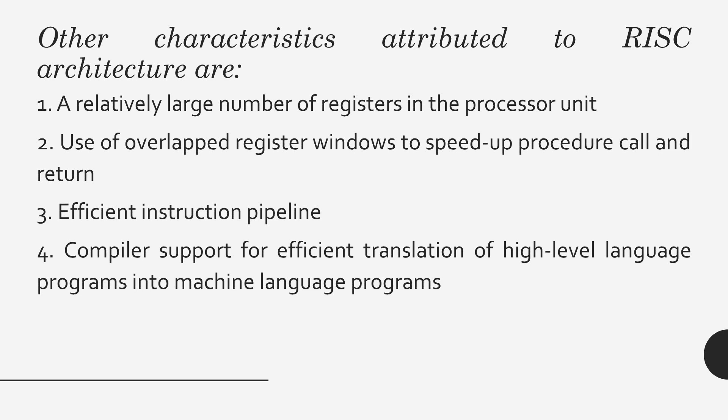Instruction pipeline is essentially a buffer which holds instructions and executes them line by line. Next, there is compiler support for efficient translation of high-level language programs into machine language programs.